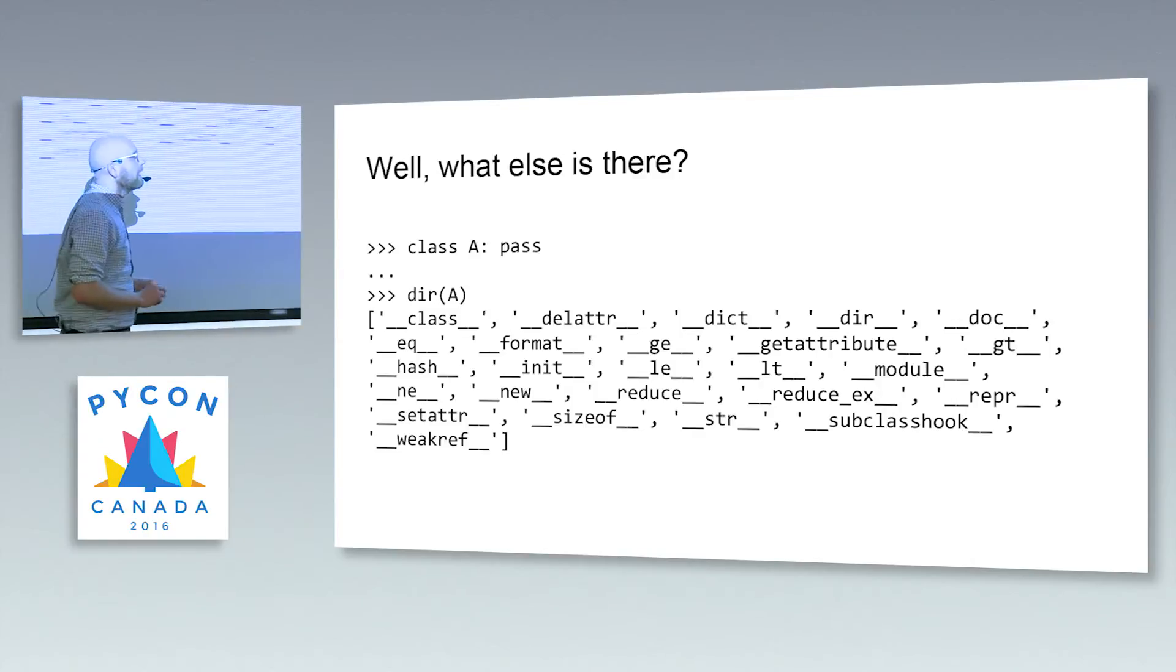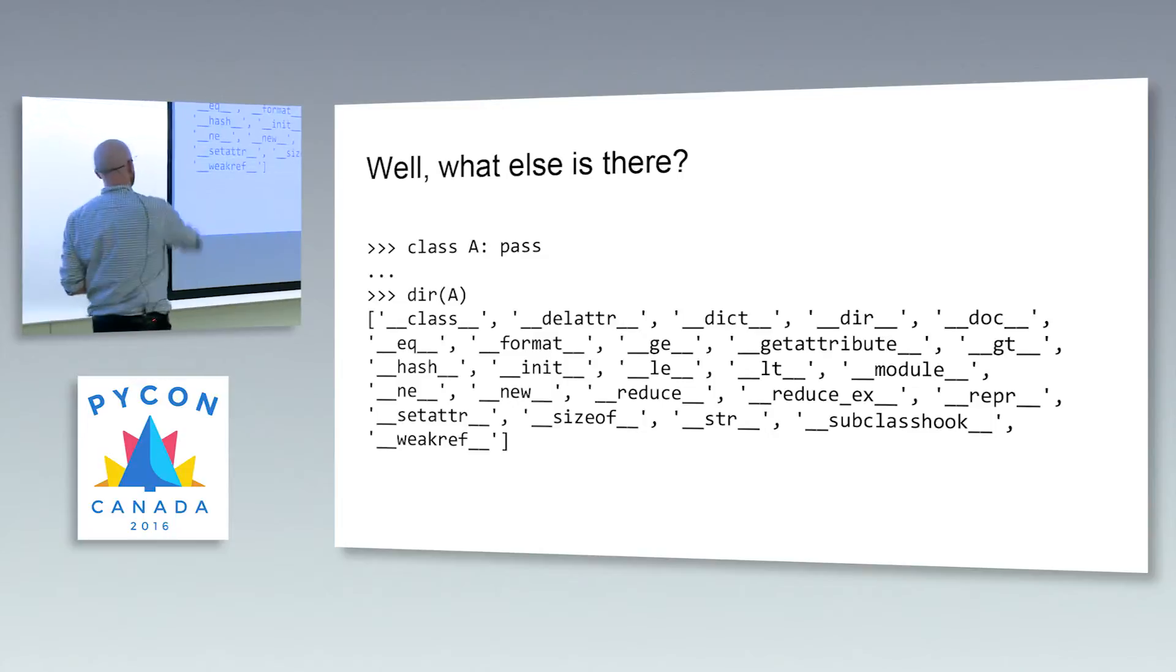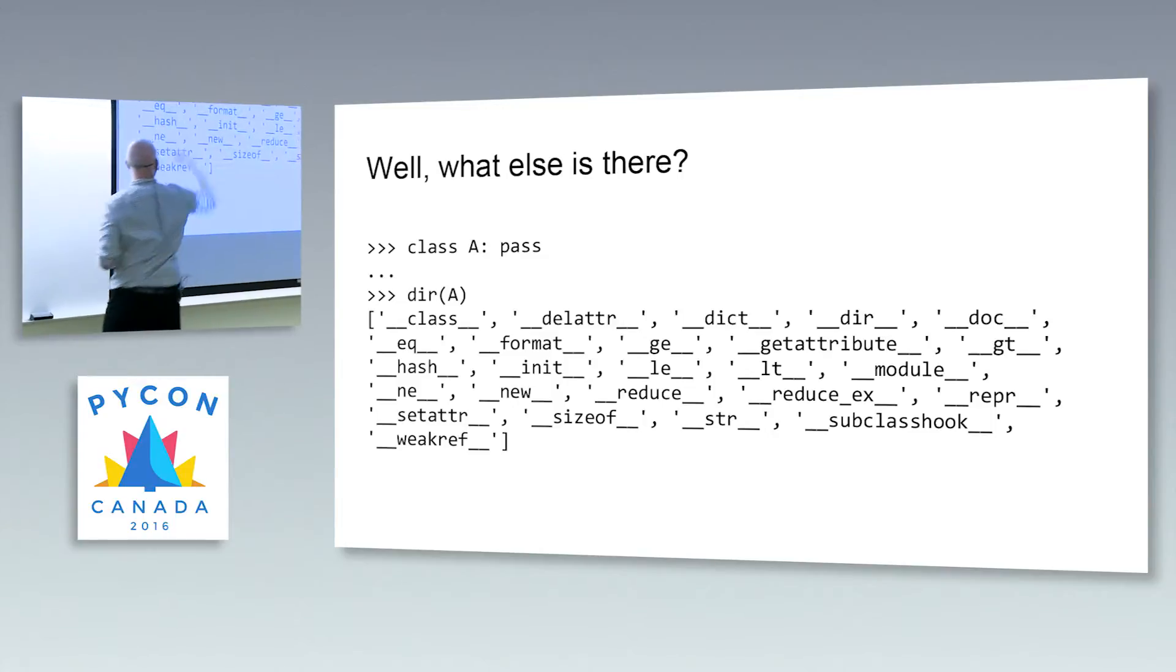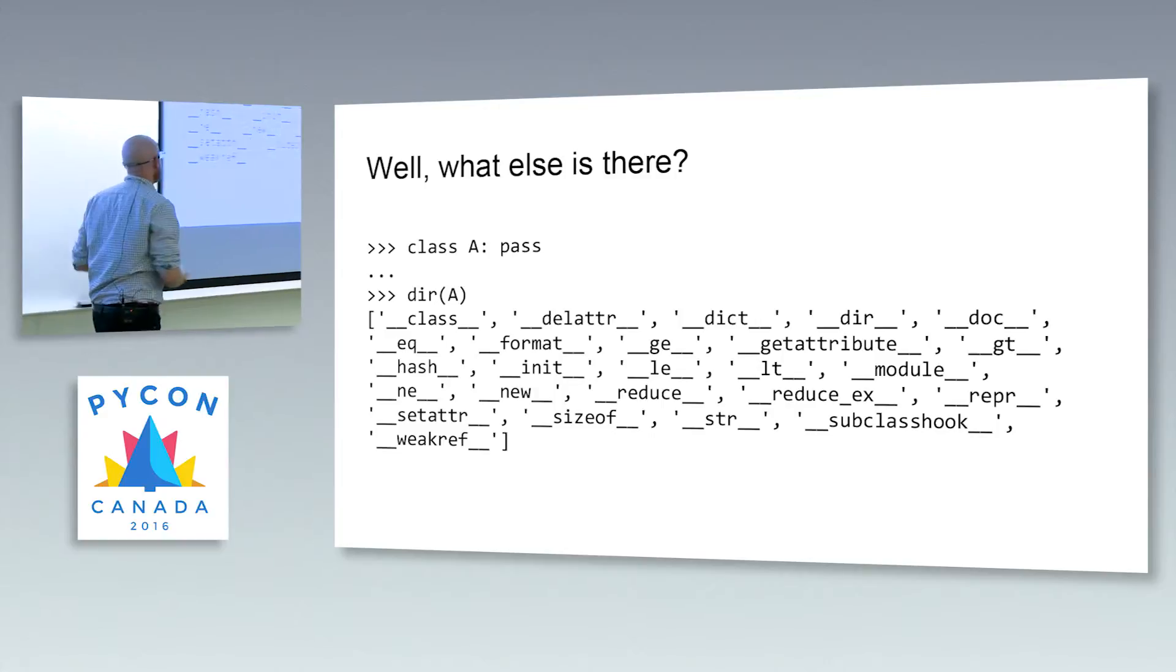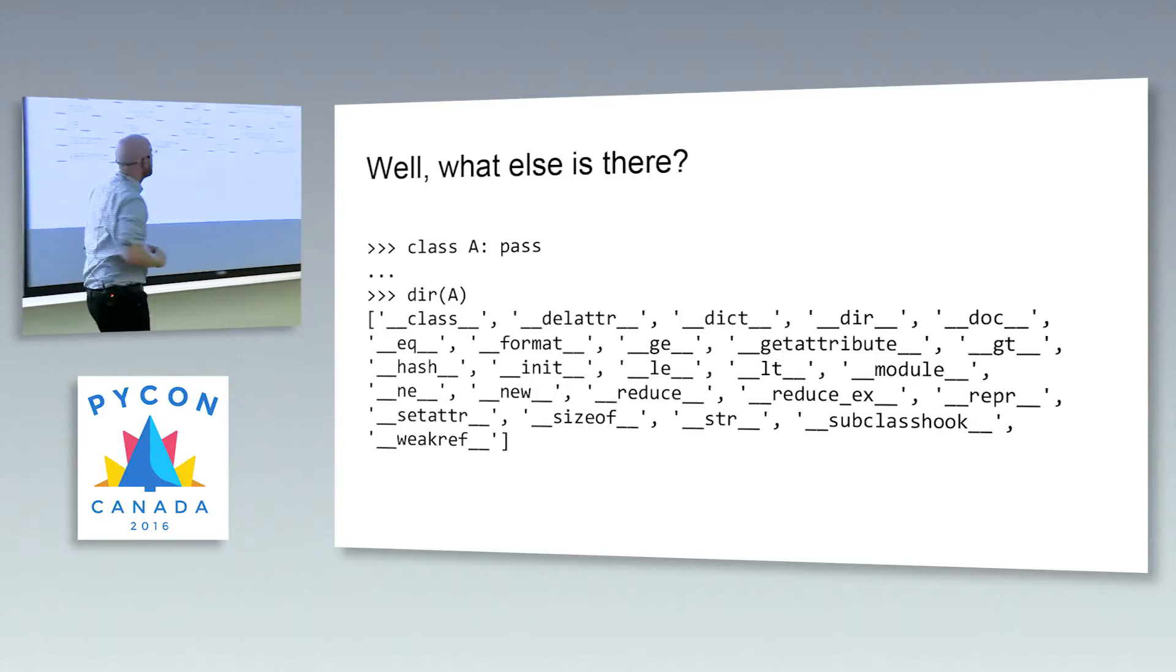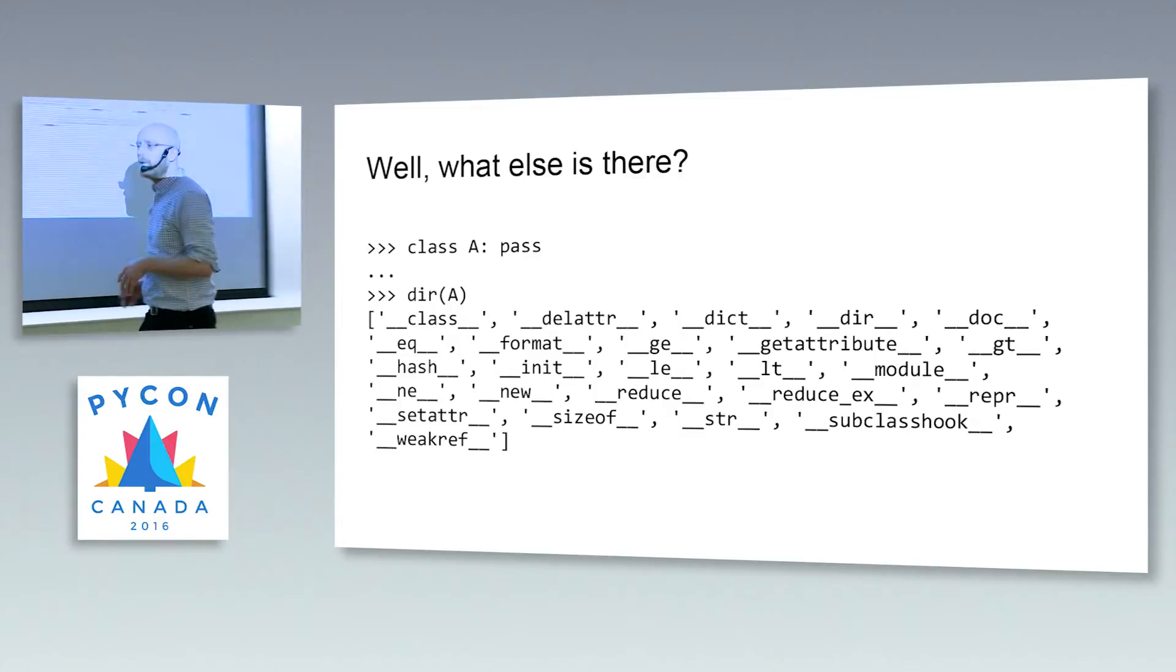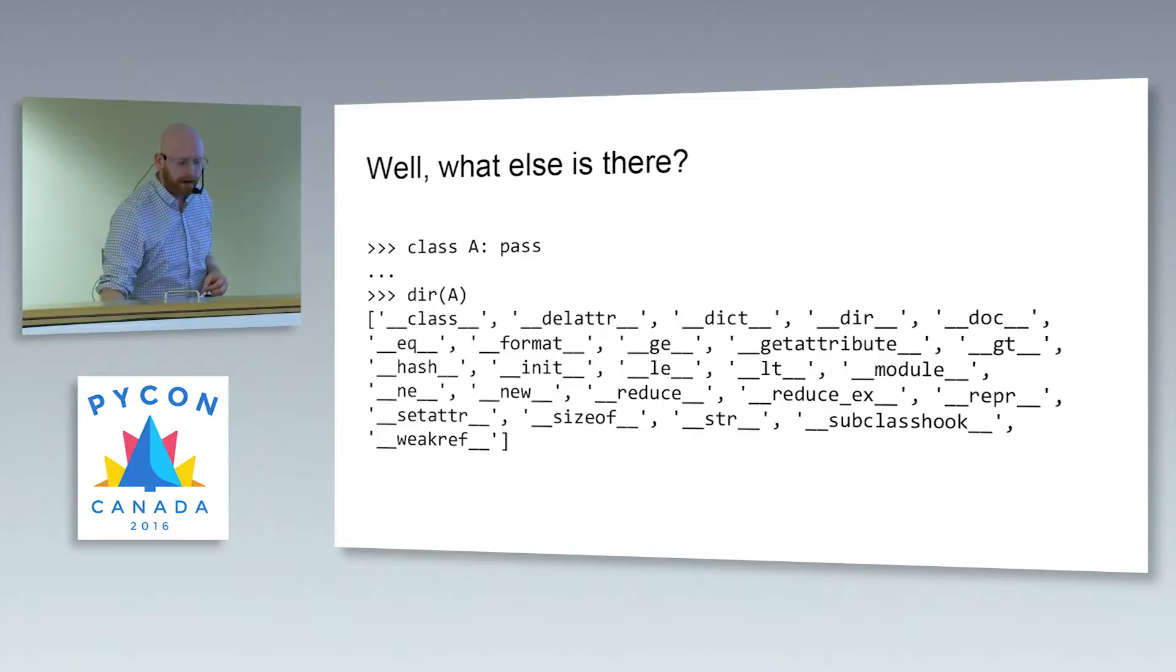A bunch of these come on a class when there's really nothing defined on the class. We get a lot of these kind of out of the box. A lot of these don't actually do anything until we implement them, but CPython already knows about them. It's just a matter of us getting around to writing the def statements.